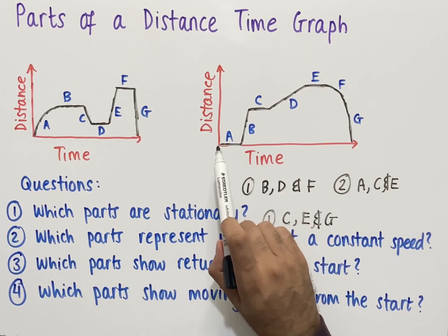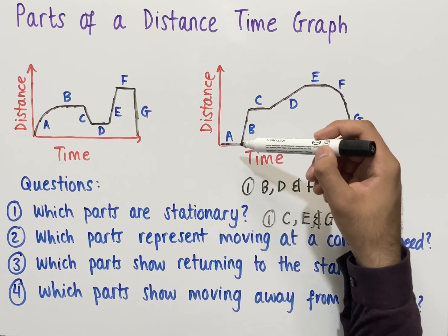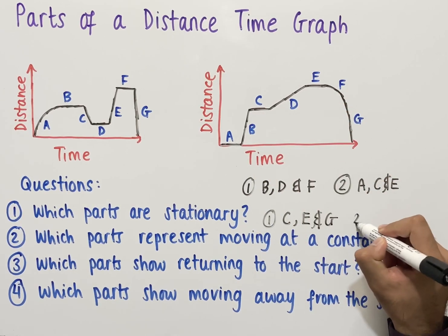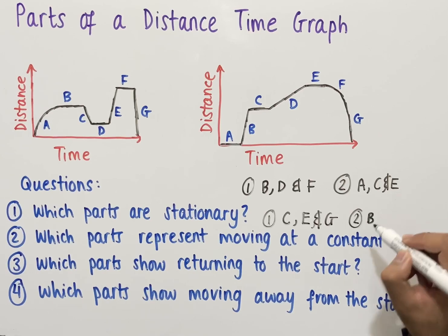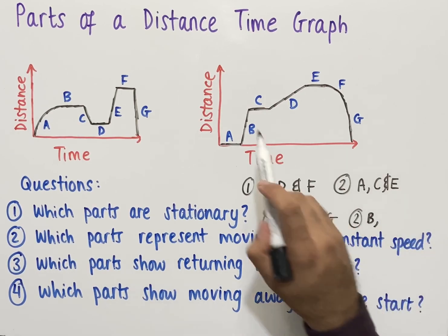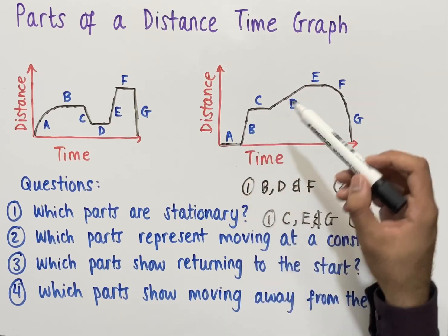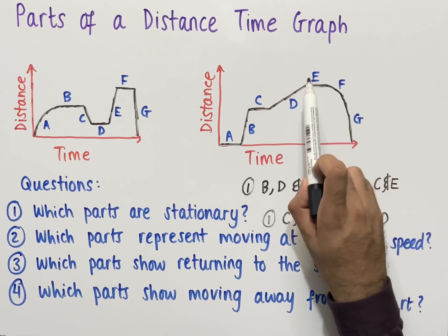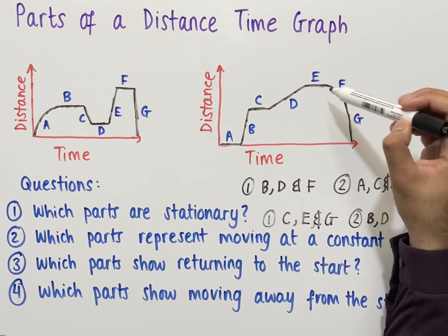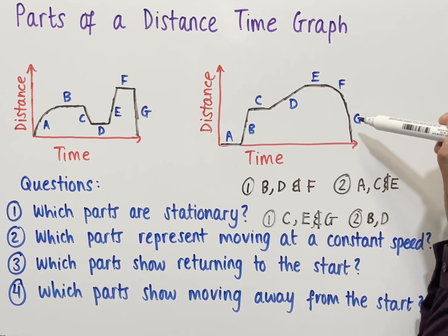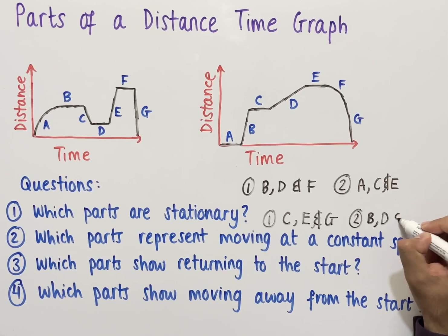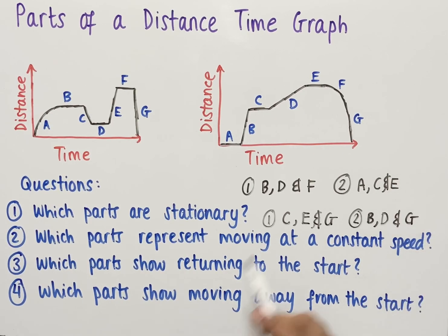For the second graph, part a represents the object being stationary, part b represents the object moving at constant speed away from the start, part c is stationary, part d is also constant speed, part e is stationary again, part f represents the object accelerating, and part g represents the object moving at constant speed back to the start. So for the second graph the answers are b, d, and g.